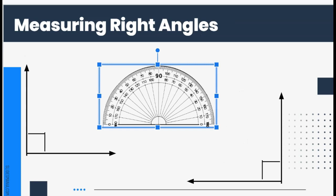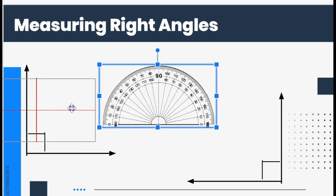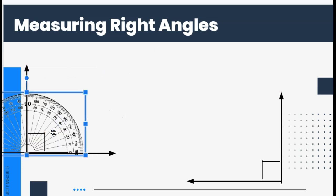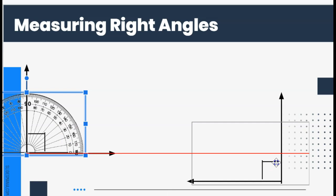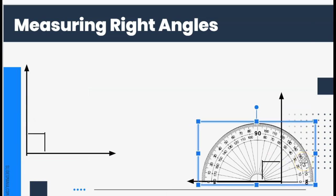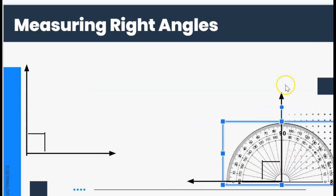Measuring right angles: I know an angle is a right angle if my lines are perpendicular, forming a 90 degree angle that looks like an L. We still want to measure to confirm it isn't 91 or 89 degrees. I line up my protractor and whether I use the inside or outside numbers it points to 90 degrees — same thing if the angle is facing the other direction.